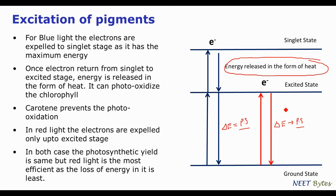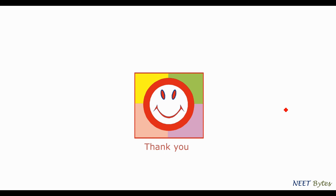This is how we can say that red light is the most efficient light for photosynthesis. That is all as far as today's session is concerned. Thank you.